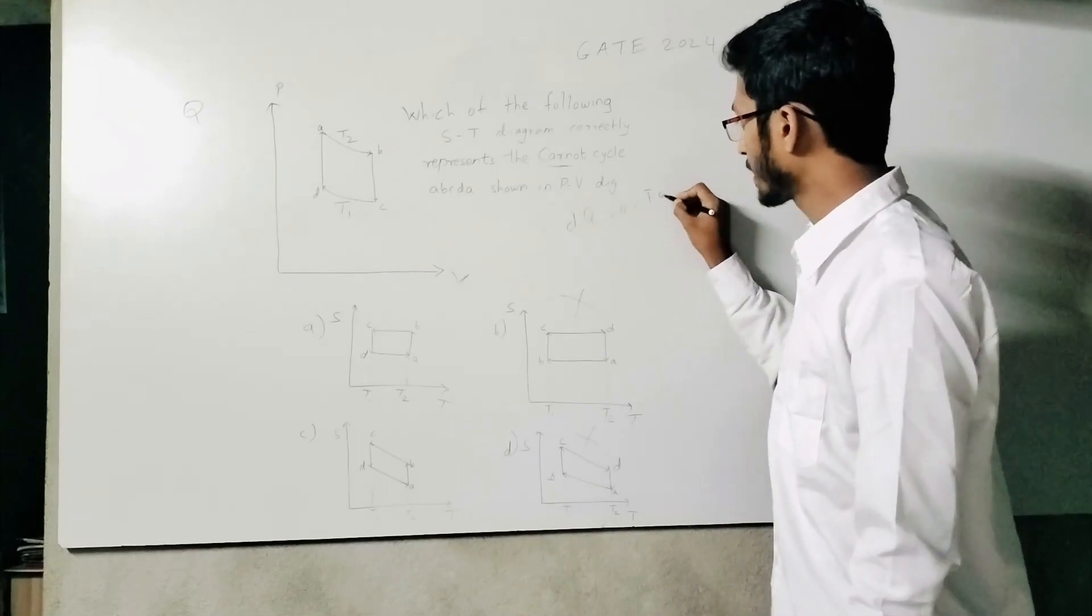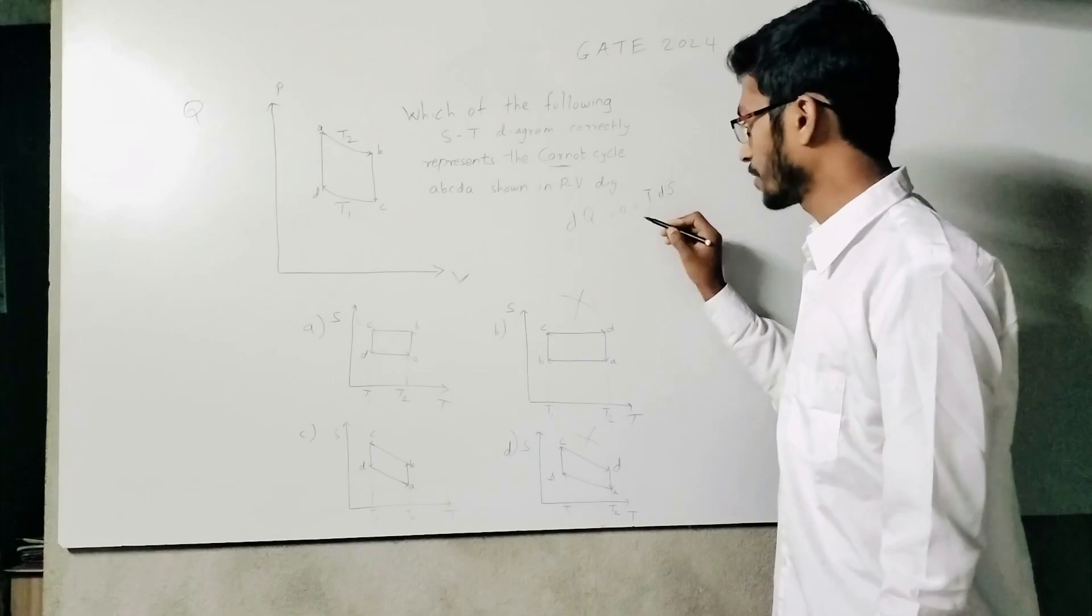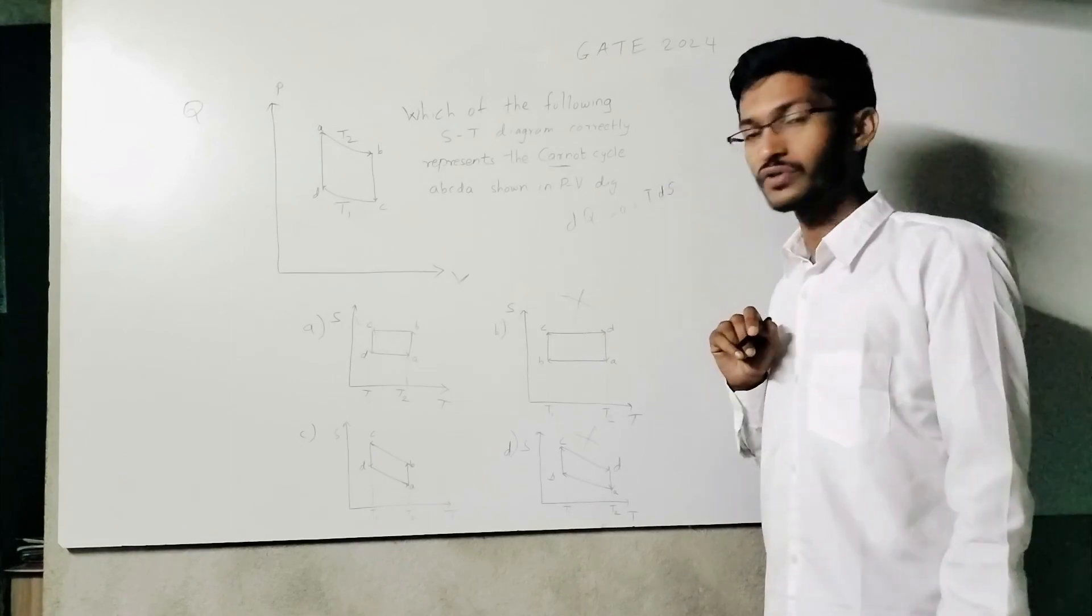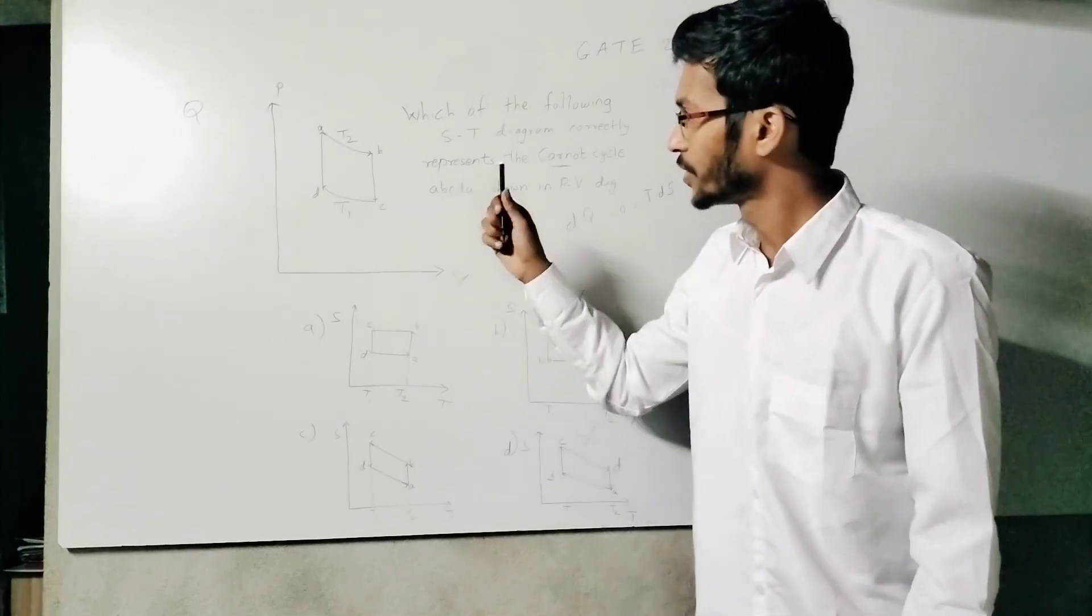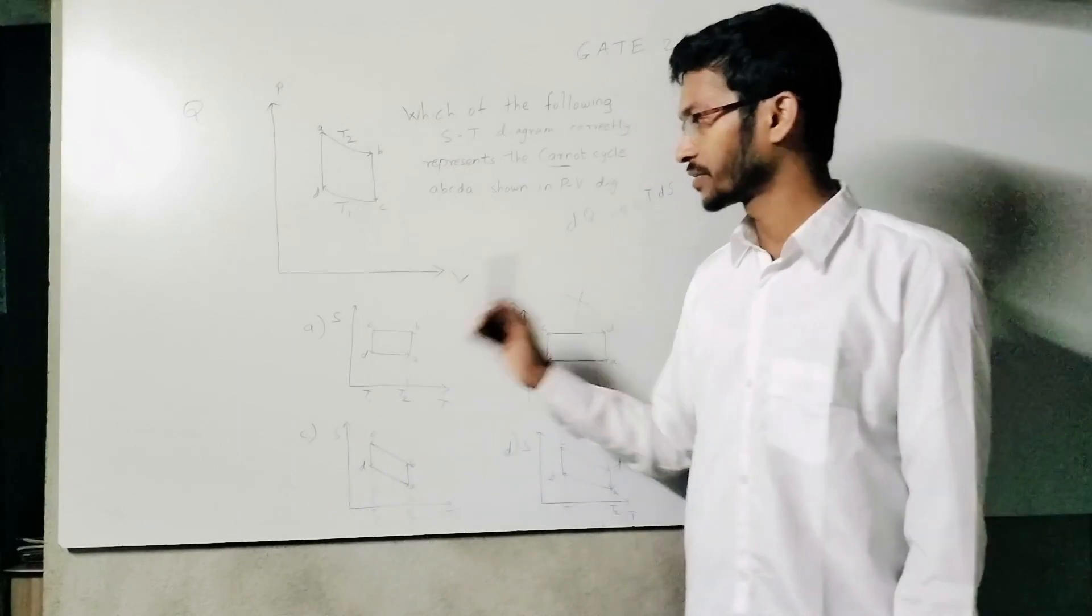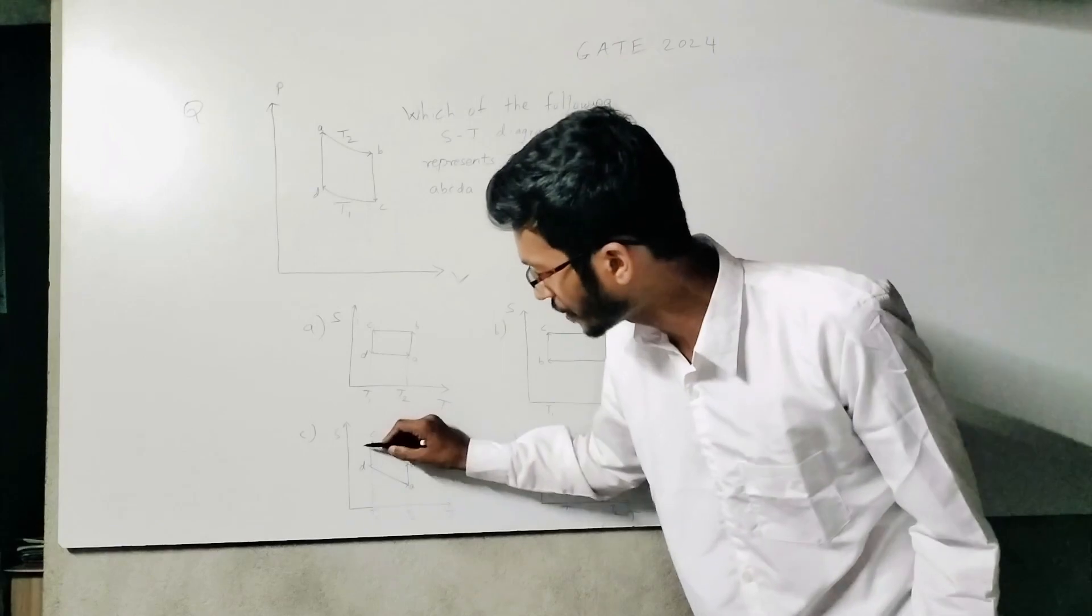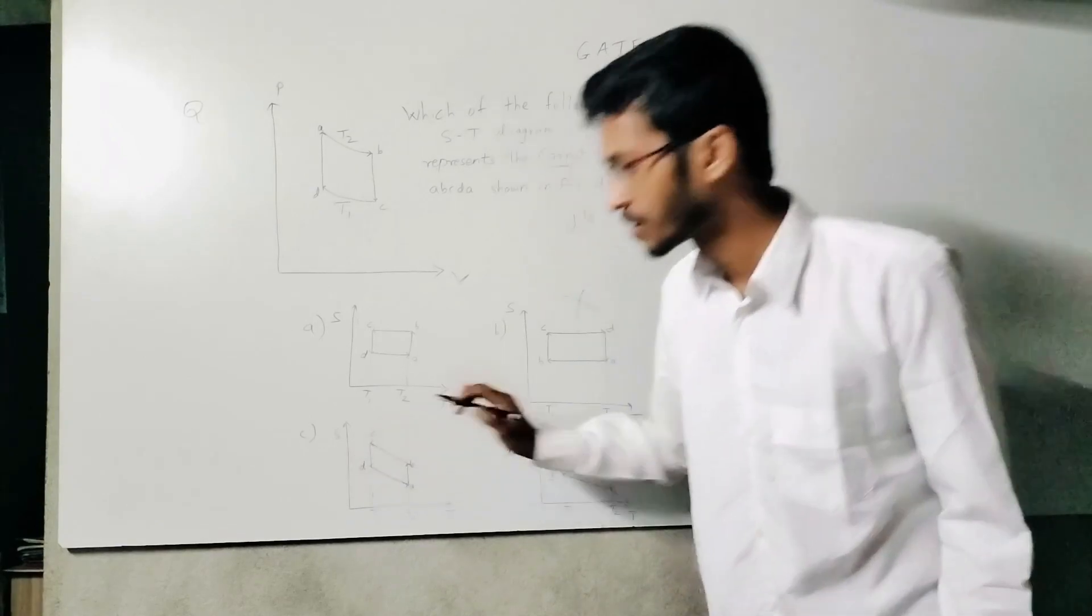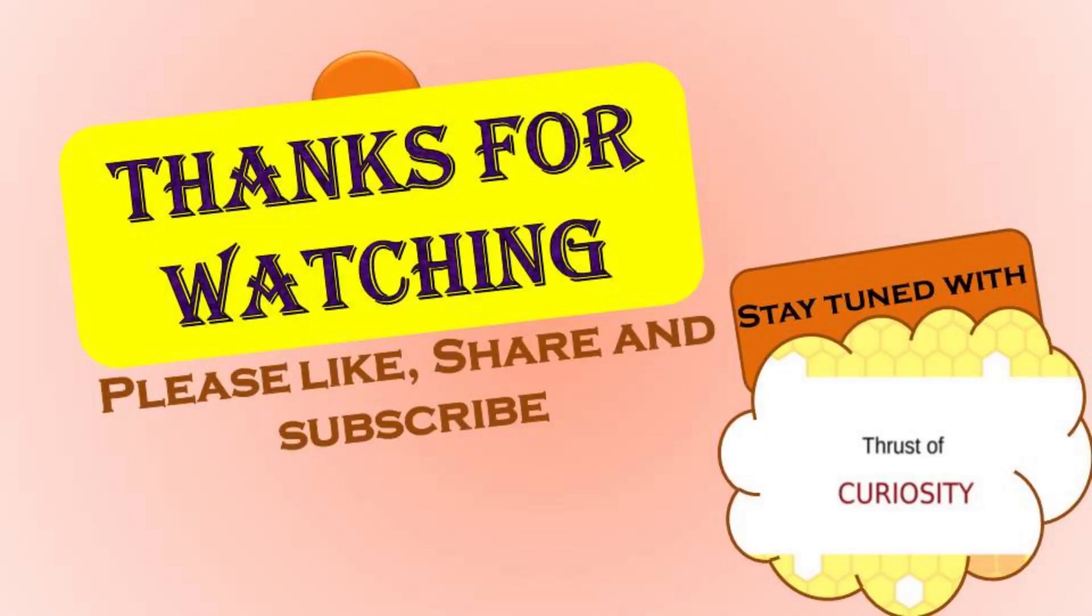But we also have DQ equals TDS. Since temperature cannot be zero, DS must also be zero. Therefore, there's no change in S. During BC and DA, which are adiabatic processes, they occur at constant entropy. In option A, this is correctly shown with constant entropy values, while other options show different entropy values. Therefore, A is the correct option.